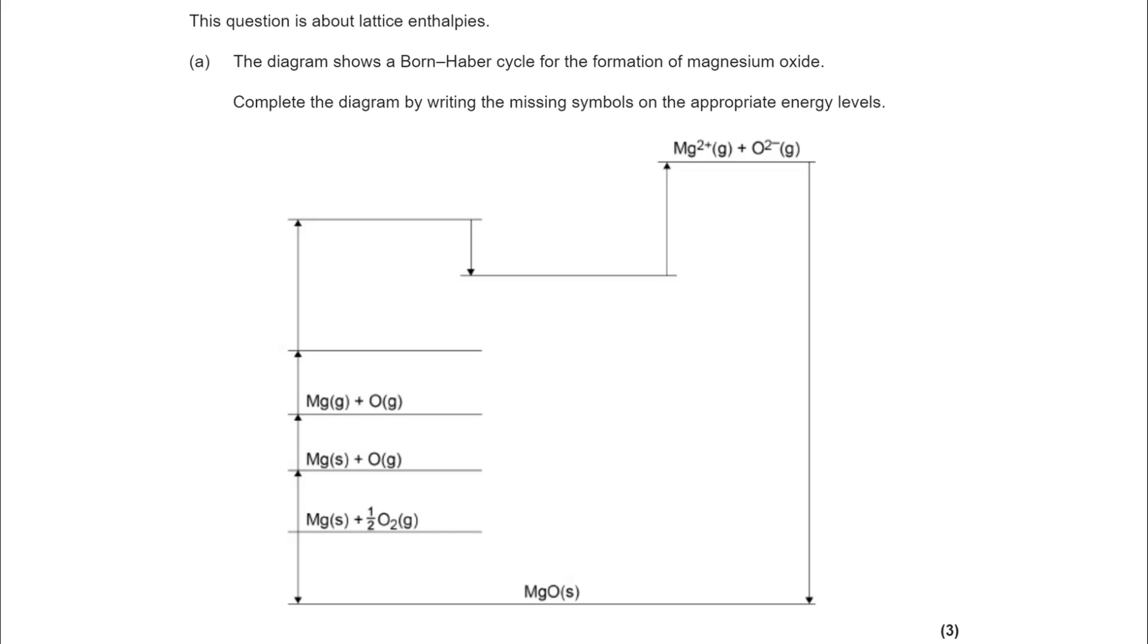So only a small question here. You've got two sections to do. Have a go at completing the Born-Haber cycle, then the calculation, and then continue through the video to review and see how you've done. So begin.